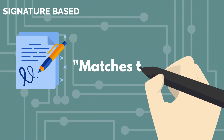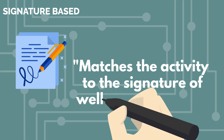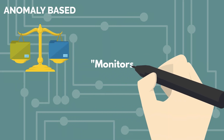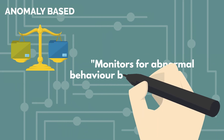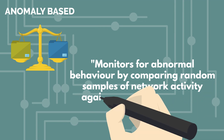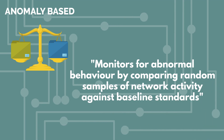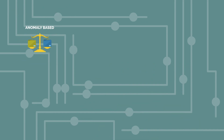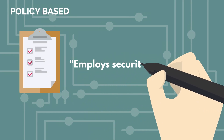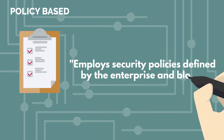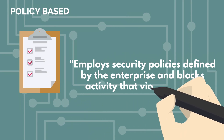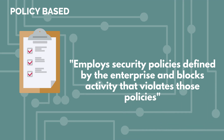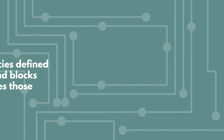An IPS signature-based method matches the activity to the signature of a well-known threat. Anomaly-based method monitors for abnormal behavior by comparing random samples of network activity against baseline standards. A policy-based method employs security policies defined by the enterprise and blocks the activities that violate those policies.